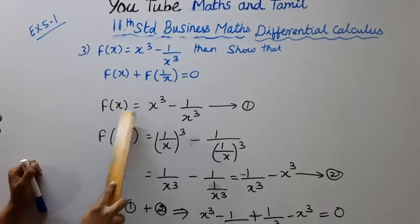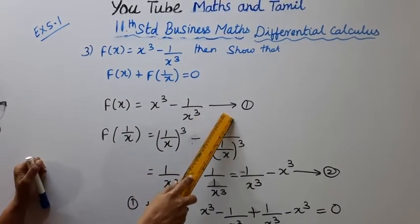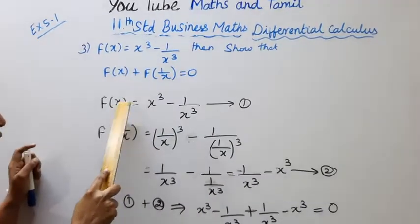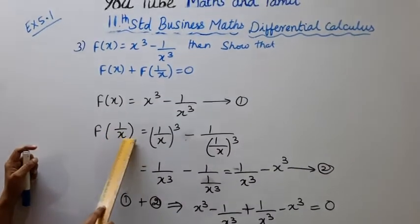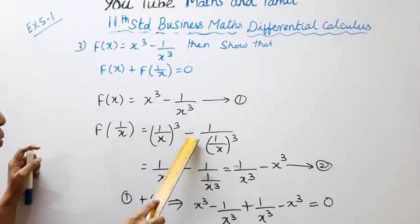f of x equals x cubed minus 1 by x cubed. This is equation 1. Now f of 1 by x equals 1 by x cubed minus...